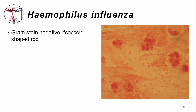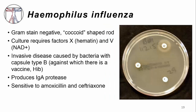One bacterium involved in this invasive disease is Haemophilus influenzae. Unlike the prior organisms we talked about, this is a Gram-negative coccoid, or sort of roundish shaped rod, as you can see in the Gram stain on the right-hand side. In culture it requires factor X and V to grow. Not all the strains are invasive, but the ones that are invasive typically have capsule type B. Fortunately, we have a vaccine that's effective against it — Hib — that has markedly decreased this type of invasive infection, particularly in children. Haemophilus produces IgA protease as a way to fend off the immune response, and is pretty sensitive to a number of beta-lactam and other antibiotics, including amoxicillin and ceftriaxone.